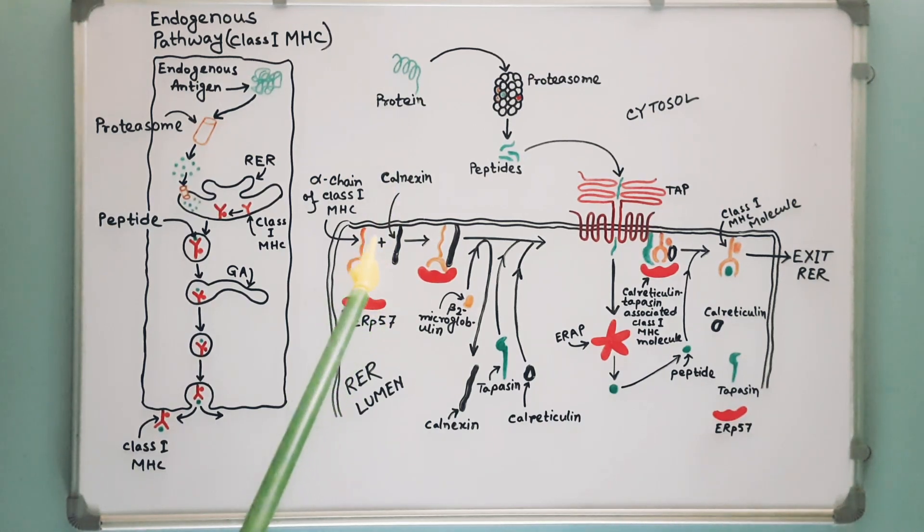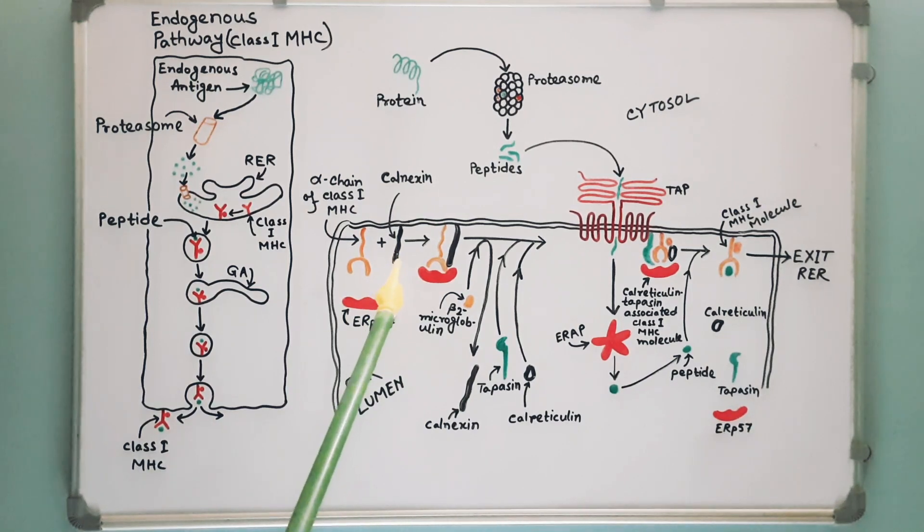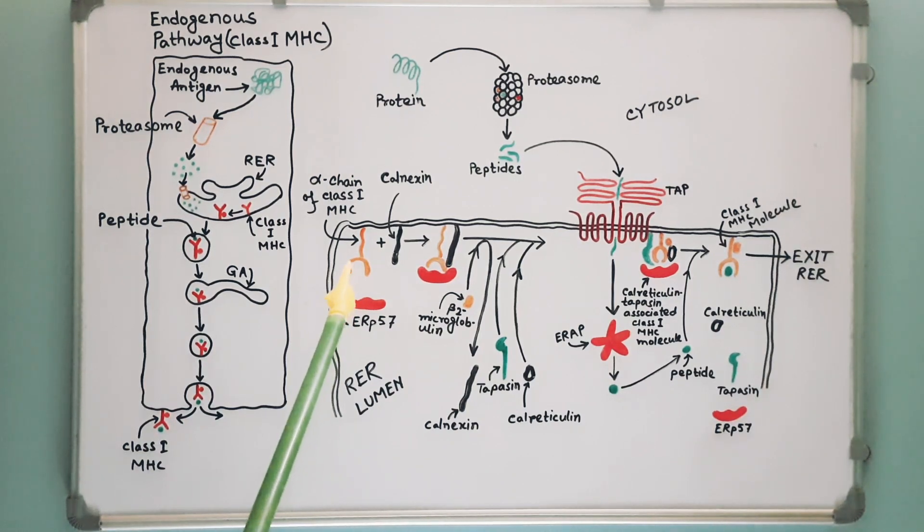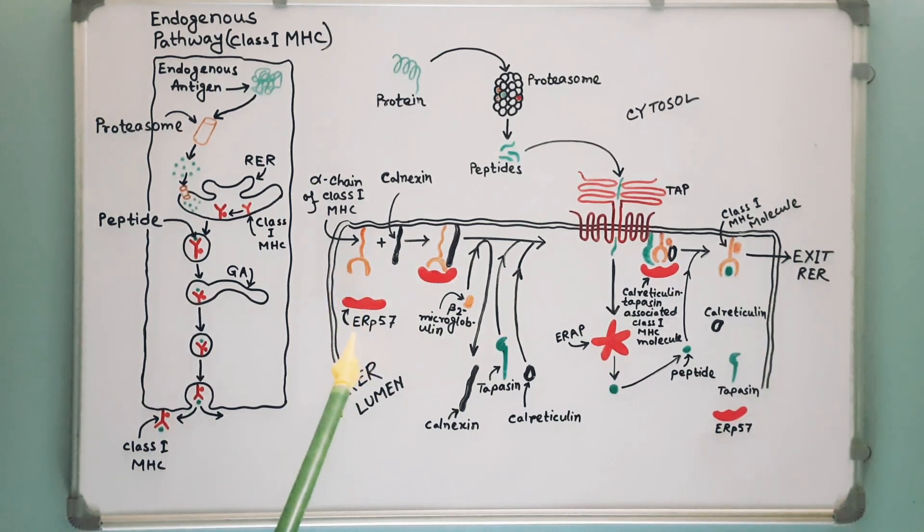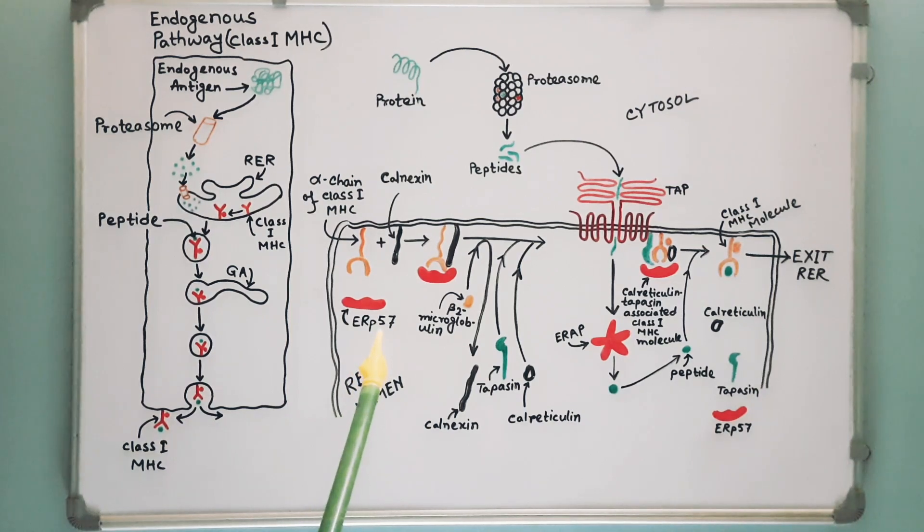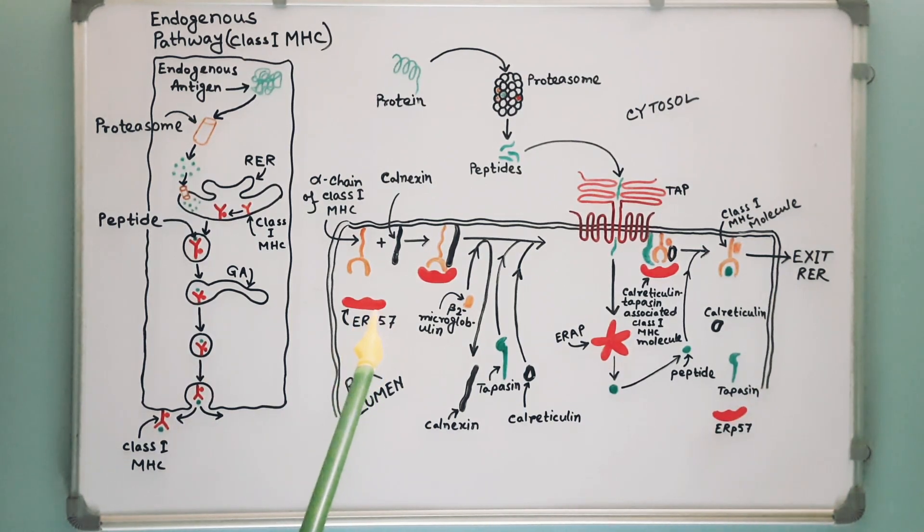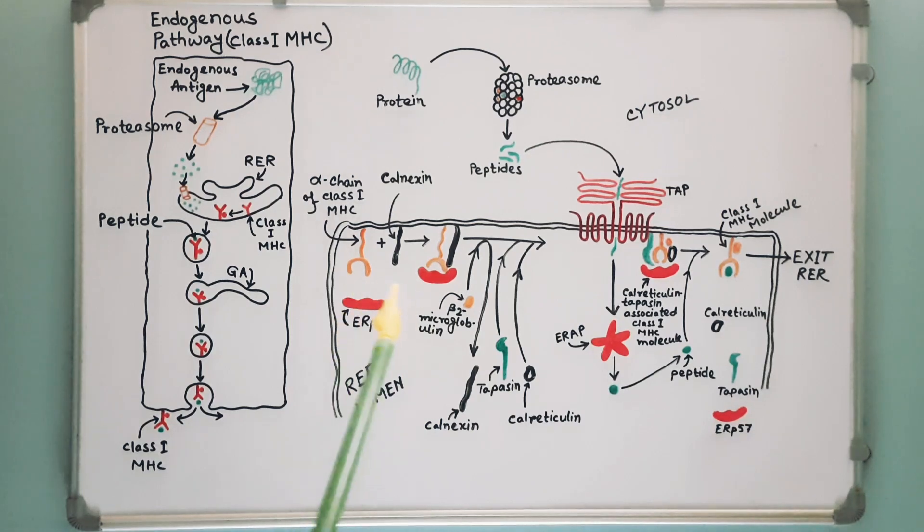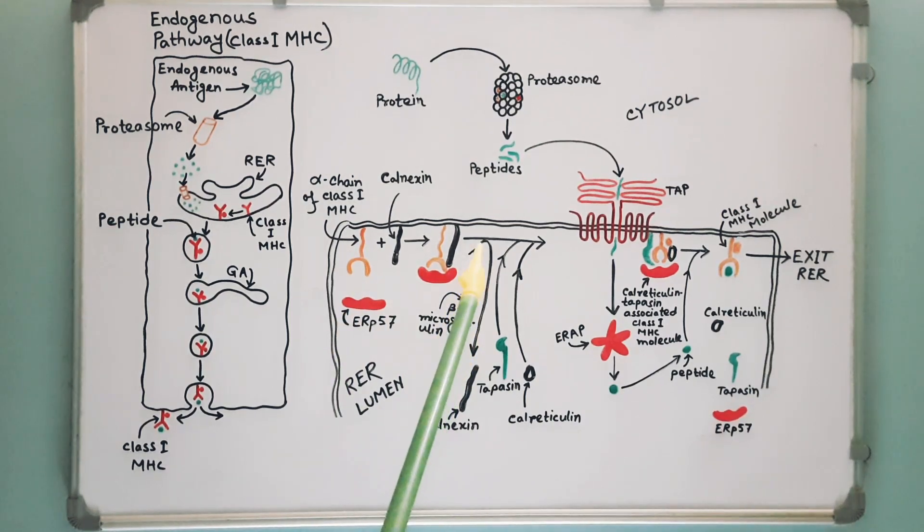It is a membrane protein of the rough endoplasmic reticulum. This is class 1 MHC alpha chain. This is ERP57, a protein with enzymatic activity. The association or combination of these three components help the folding of class 1 MHC alpha chain. Then beta-2 microglobulin binds to the alpha chain and calnexin is released.